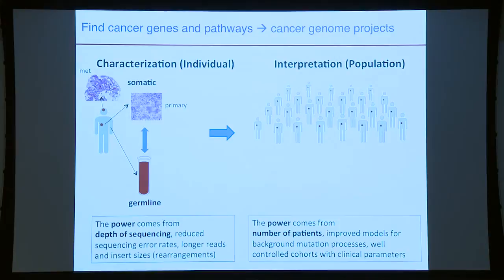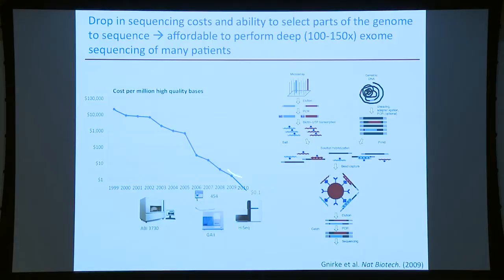All these projects were possible due to the dramatic drop of sequencing cost in the last decade — more than a million fold. And the ability to capture only parts of the genome we want to sequence means that, even for many patients, sequencing only the exome is still cheaper than sequencing the entire genome.